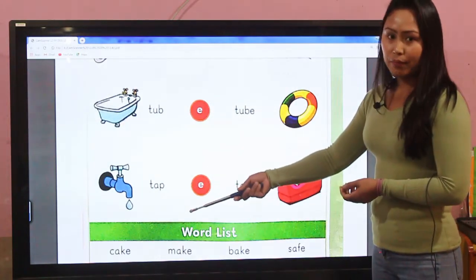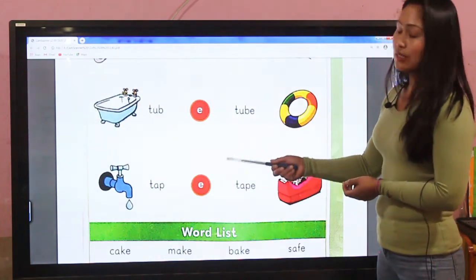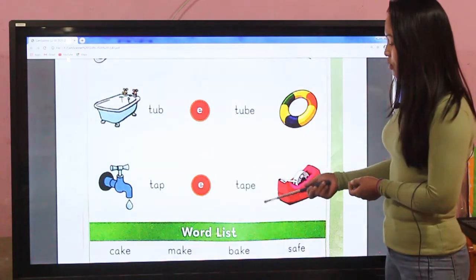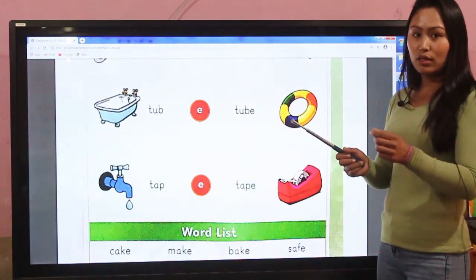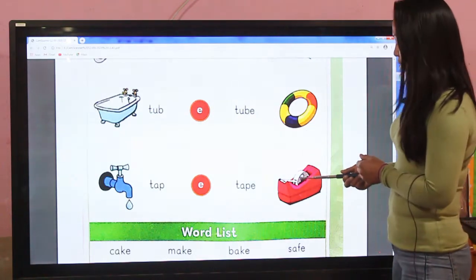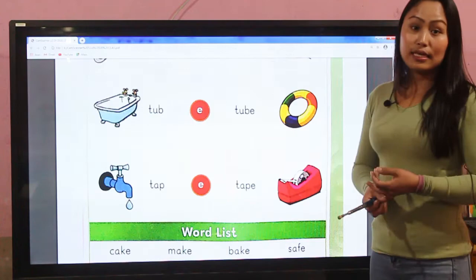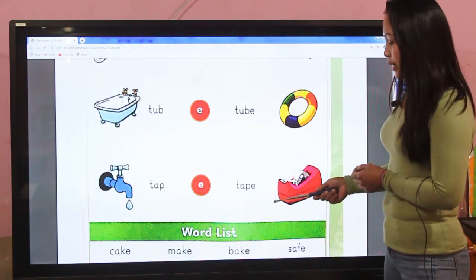Tap - when we add e at the end it becomes tape. The tap word is derived into tape. Similarly with other examples like this.